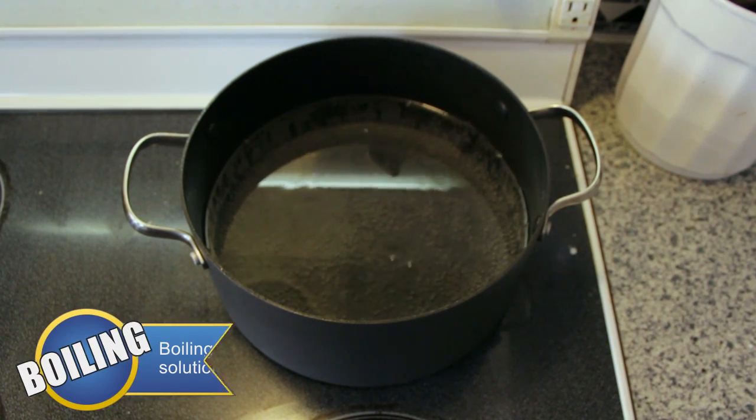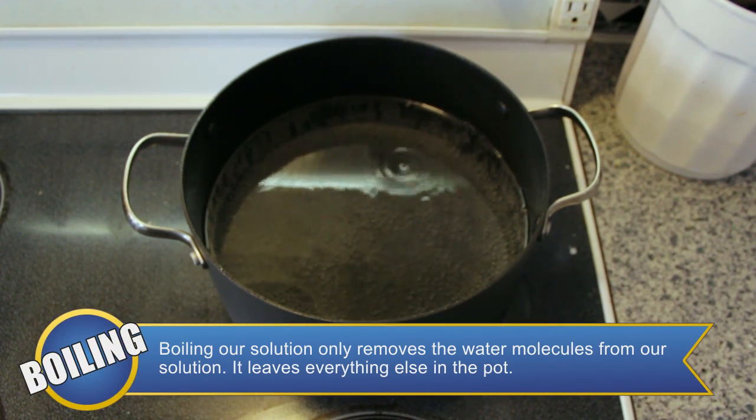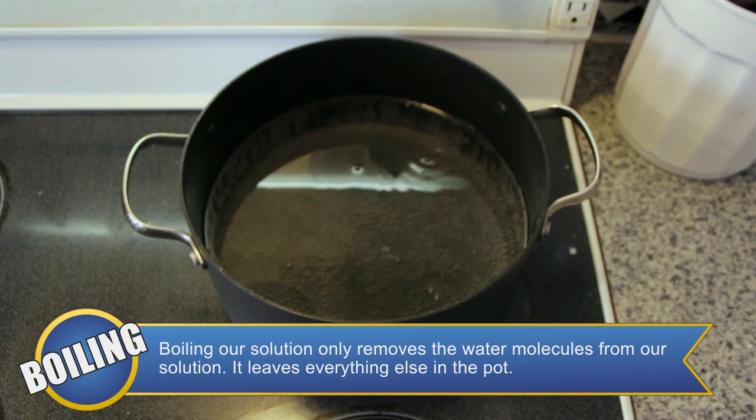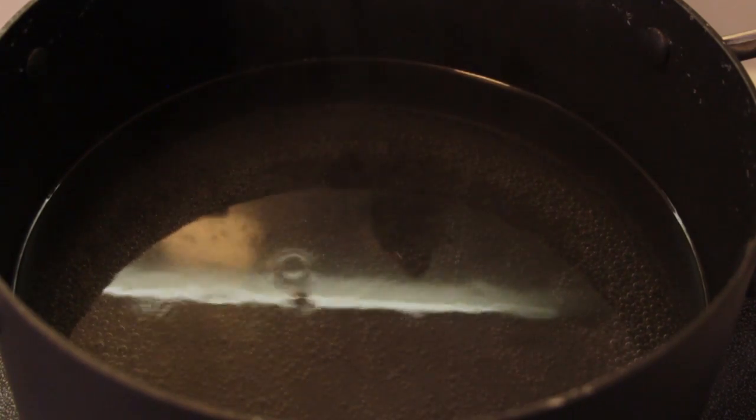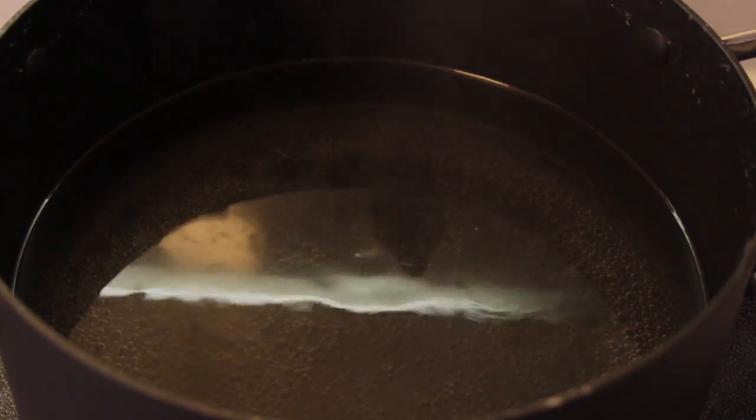Place your pot on the stove and boil your solution on the stovetop to concentrate it. Boil your solution over low heat instead of high heat. Boiling your solution at high temperatures will cause it to turn yellow or brown. Boiling your solution over low heat will take multiple hours, so be patient.